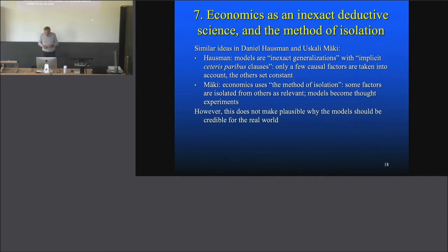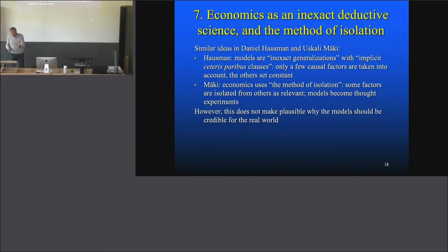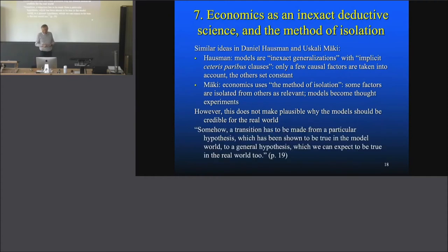Sugden's objection is that this does not make plausible why the model should be credible for the real world. You may say yes, these descriptions with inexact generalizations and isolations are fine — but the point is, why does that not impair the credibility of a model for an explanation in the real world? It's not only that the true elements of a model are interesting, but also the untrue elements are interesting. So why don't they do any harm in a model? You've got to have some story about how that works.